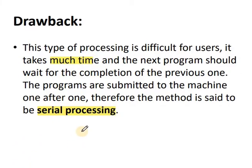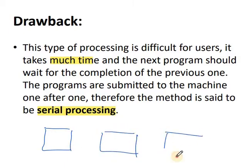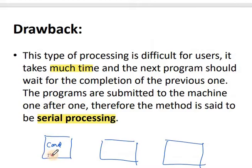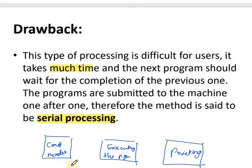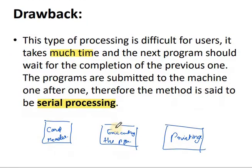An important characteristic of serial processing is that the system consists of 3 rooms: the first room for the card reader, the second for executing the programs, and the third for printing the results. The operator has to run between these 3 rooms to check the job.